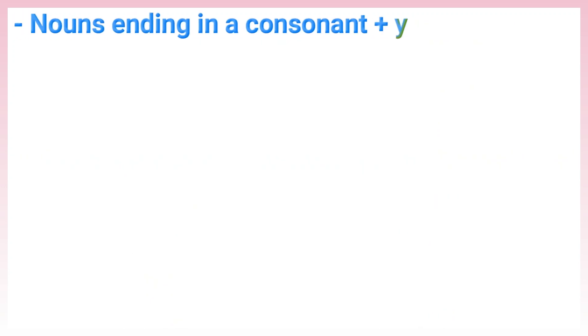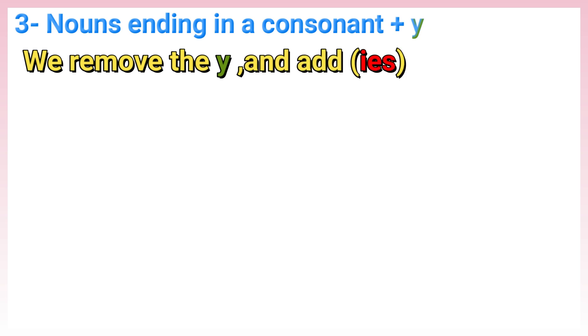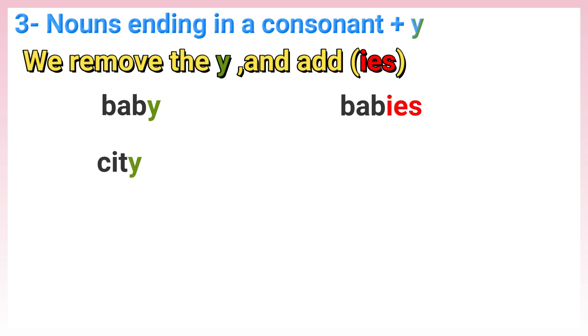Rule 3: Nouns ending in a consonant plus Y — we remove the Y and add IES. Such as: baby → babies, city → cities.